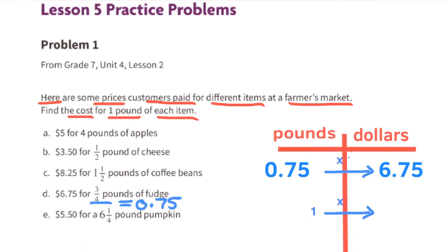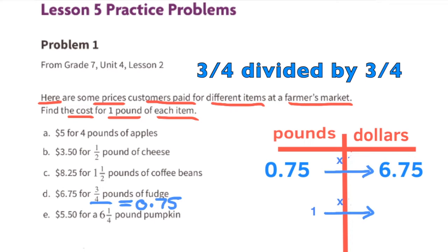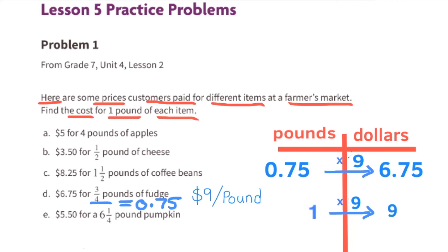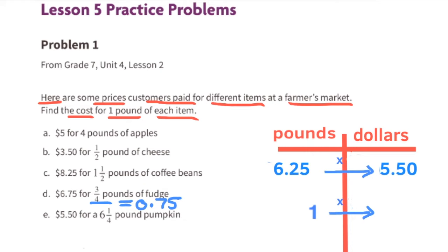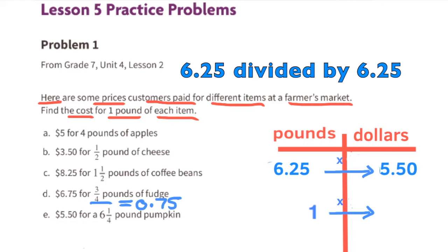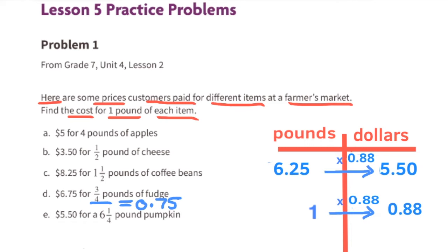Part d: six dollars and seventy-five cents for three-fourths of a pound of fudge. Three-fourths of a pound divided by three-fourths equals one pound. Six dollars and seventy-five cents divided by three-fourths equals nine. So one pound of fudge costs nine dollars. Part e: five dollars and fifty cents for six and a quarter pounds of pumpkin. Five dollars and fifty cents divided by six and a quarter equals eighty-eight cents per pound.